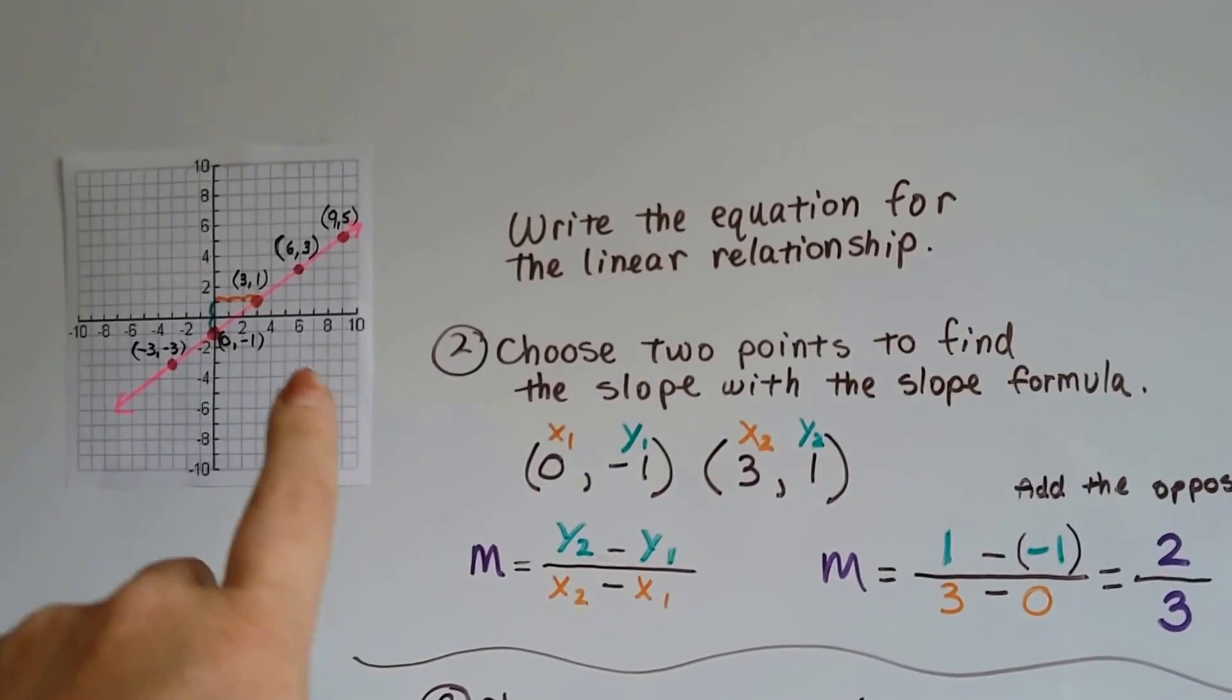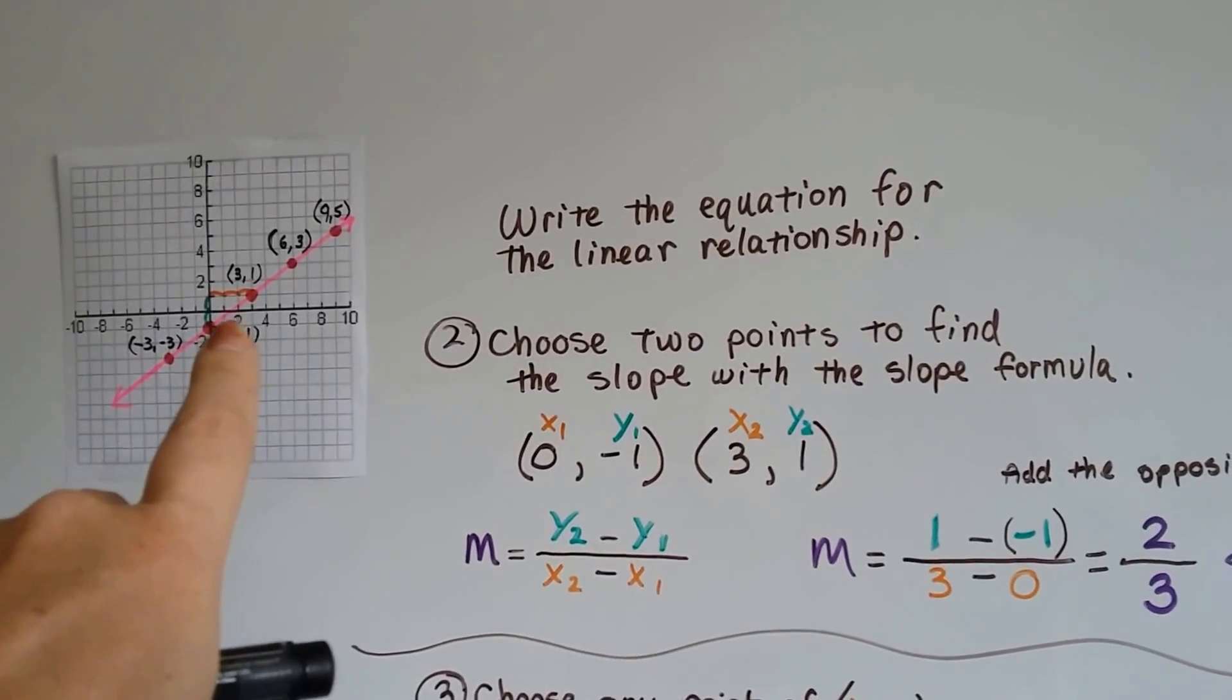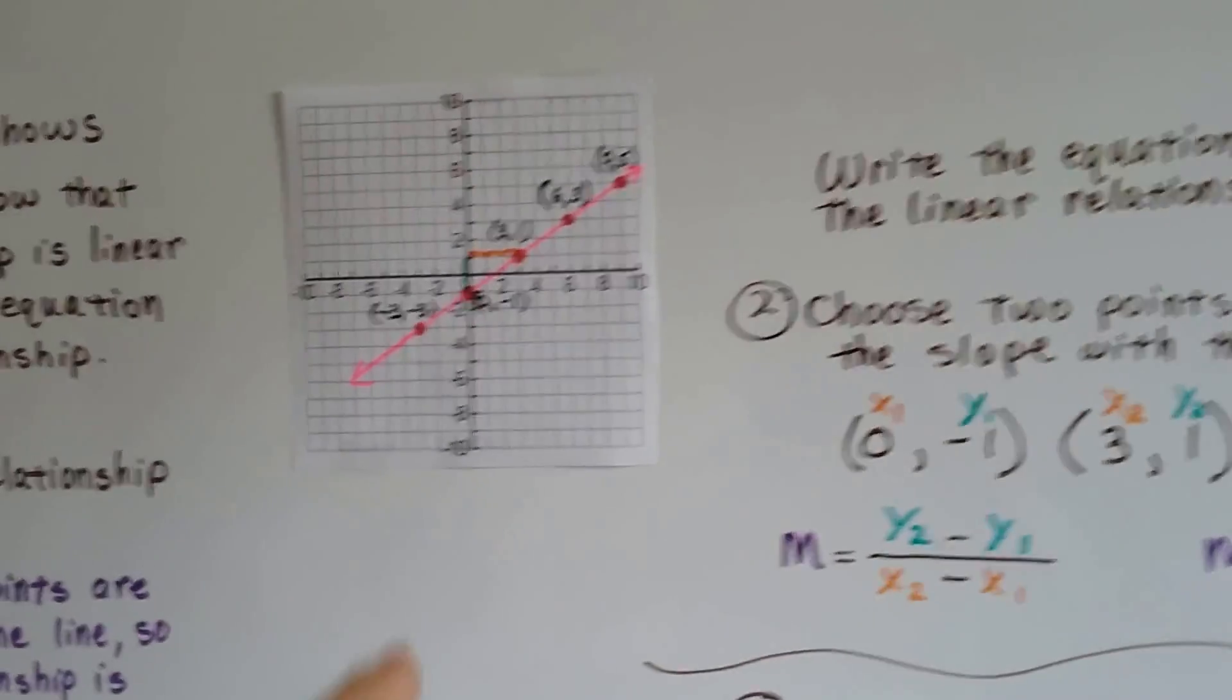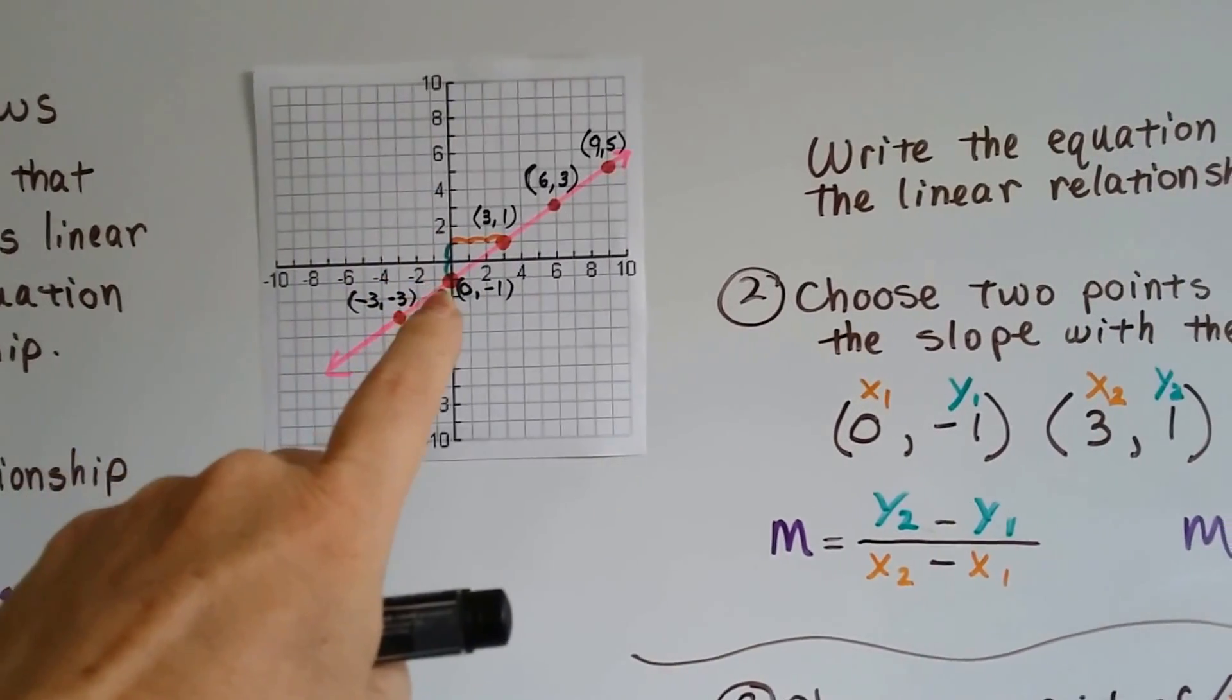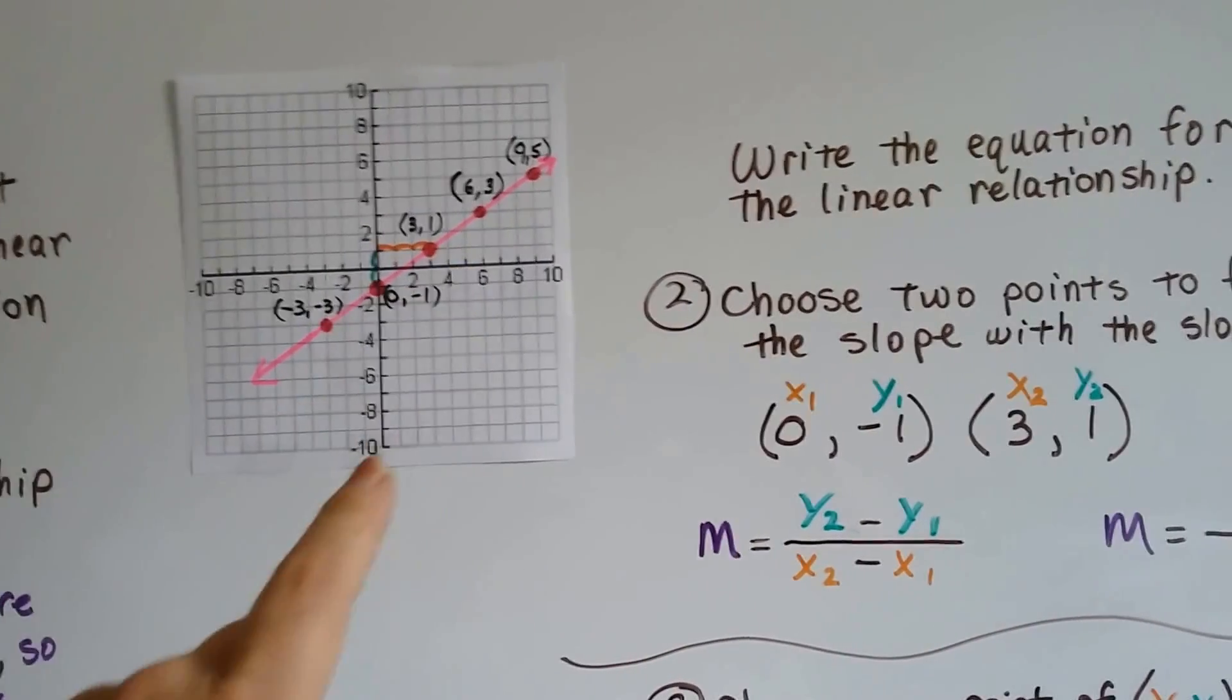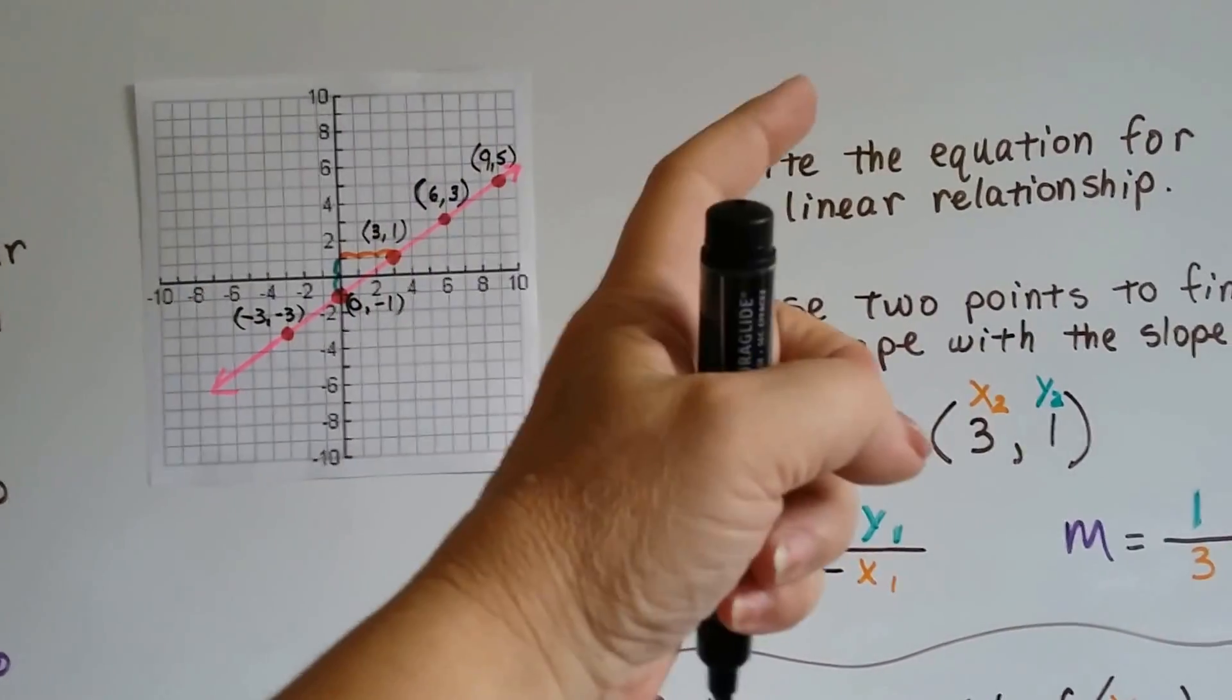So I chose (0, -1) and (3, 1). And remember, we choose our points from left to right. So I chose this one as x1, y1, and this one as x2, y2. We have to go from left to right.